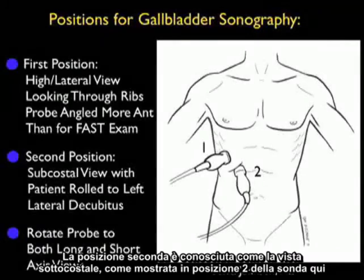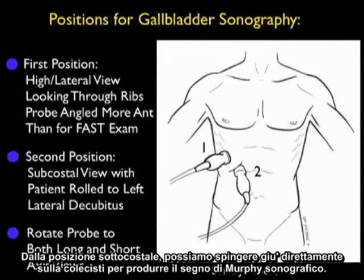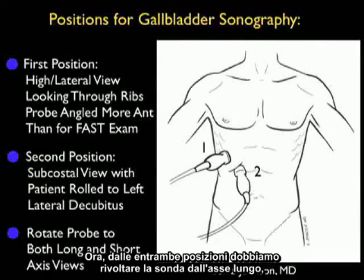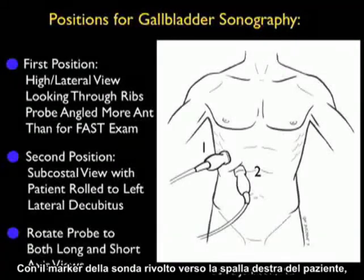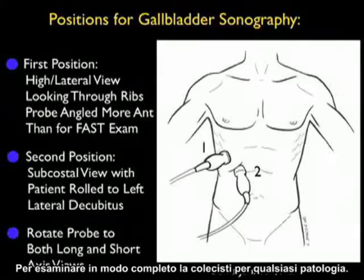The second position is known as the subcostal view, as shown in probe position two. It's best to roll the patient into the left lateral decubitus position so that the gallbladder is closer to the probe. From the subcostal position, we can push down directly on the gallbladder to elicit the sonographic Murphy's sign. From both positions, we should rotate the probe from long axis with the probe marker towards the patient's right shoulder to the short axis configuration with the probe marker towards the right side to completely inspect the gallbladder for any pathology.